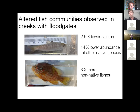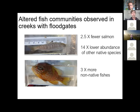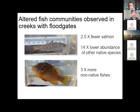When we look broadly across the whole native fish community, we saw 14 times lower abundance of other native species like prickly sculpin, pea-mouth chub, and red-side shiner. And then we saw an increased abundance of non-native species like pumpkinseeds and brown bullheads. So we've seen this big change in water quality, we know there's a problem with access, and it's really borne out in the fish data where we see a huge difference between our reference sites and our sites with floodgates.